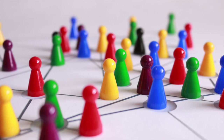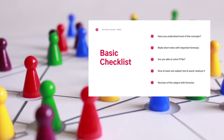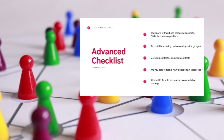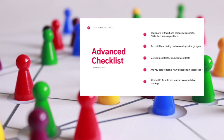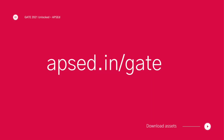In the previous video, we went over a basic and advanced checklist which can help you keep track of your preparation for each subject. In case you missed the video, you can find it at apacd.in/gate. You will find all the parts of this GATE 2021 Unlocked series with downloadable assets, handouts, PDFs, and Excel sheets. The link is also in the description box.